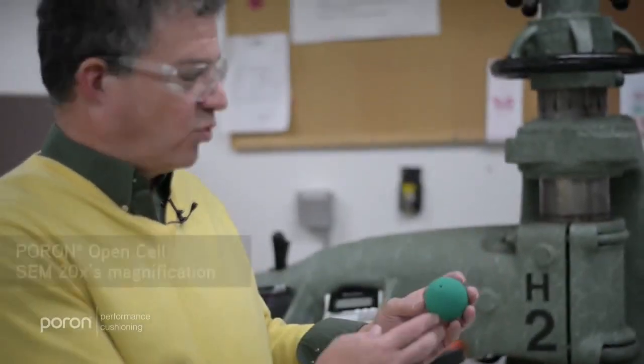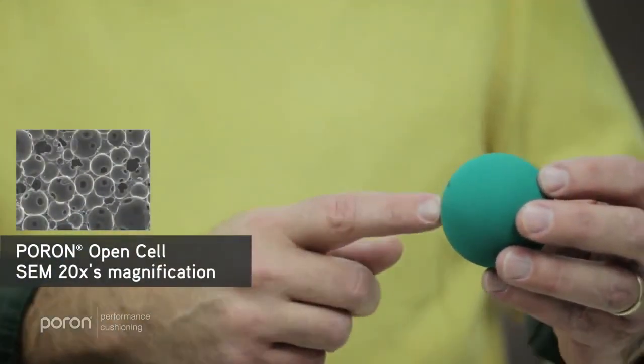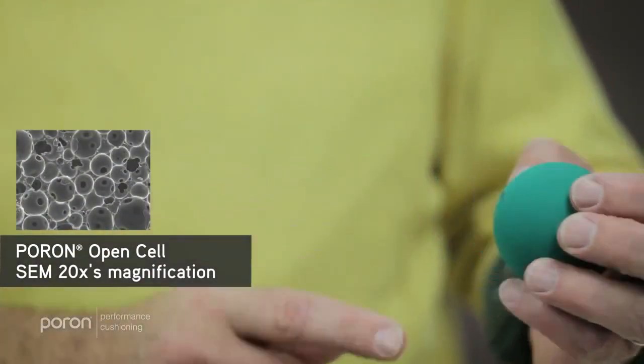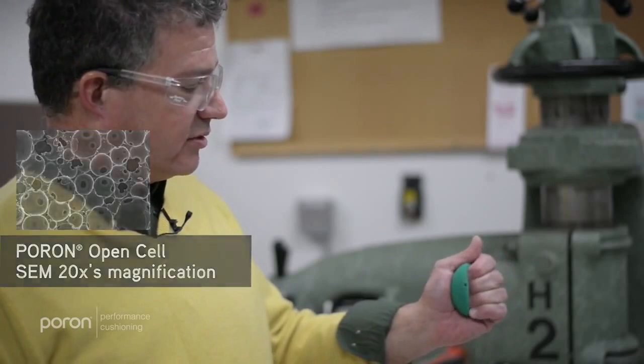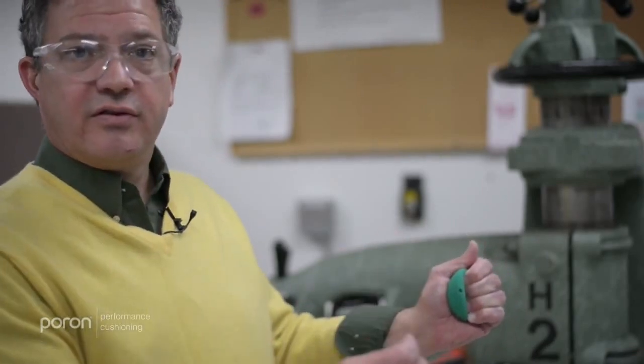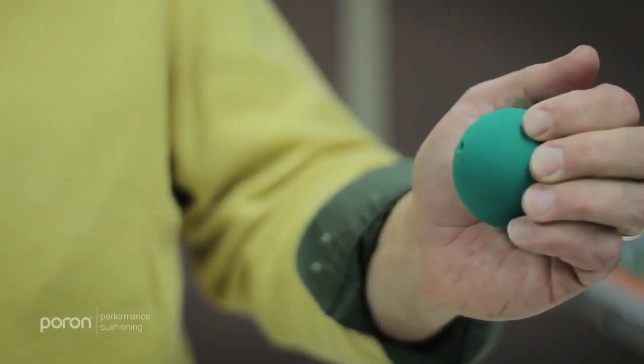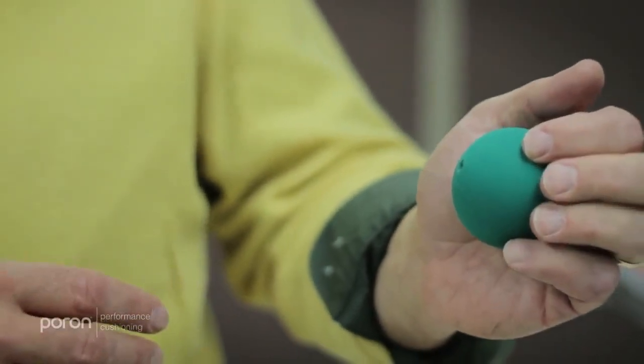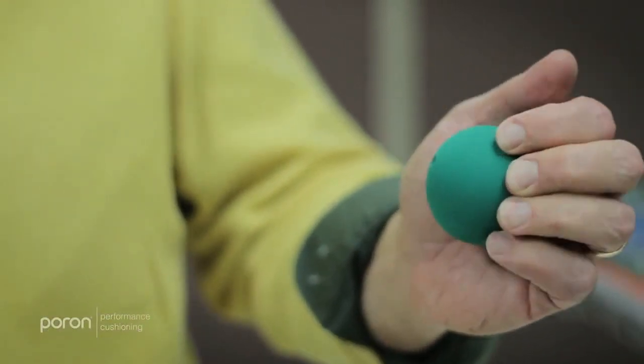An open cell foam is more like this racquetball ball that I've drilled a hole in. When you squeeze it the air goes out of the cell, and when you let it go the air can easily go back in. So the air will come in and out, and it gets its properties not from keeping the air inside of it but from the material around the cell.